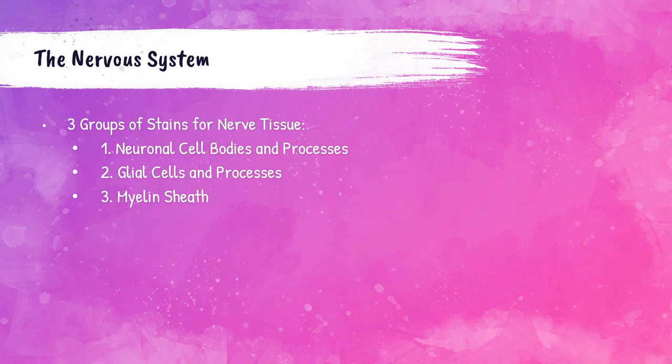From a histological perspective, the nervous system can be broken down into three different categories of things that we stain: neuronal cell bodies and their processes, glial cells and their processes, and the myelin sheath. We'll talk about each of these groups here in this lecture.